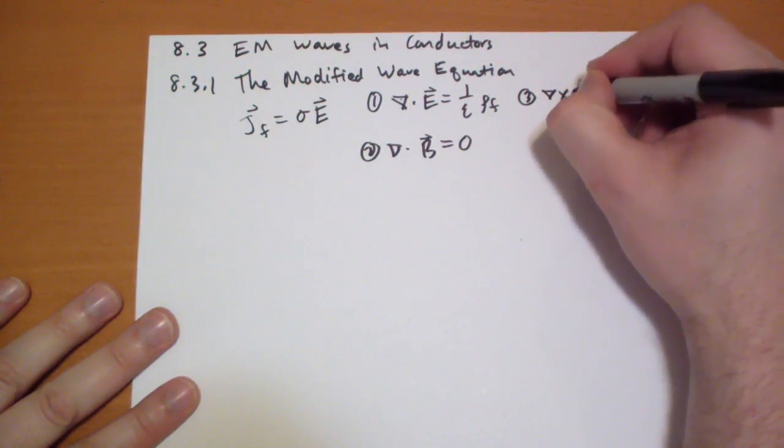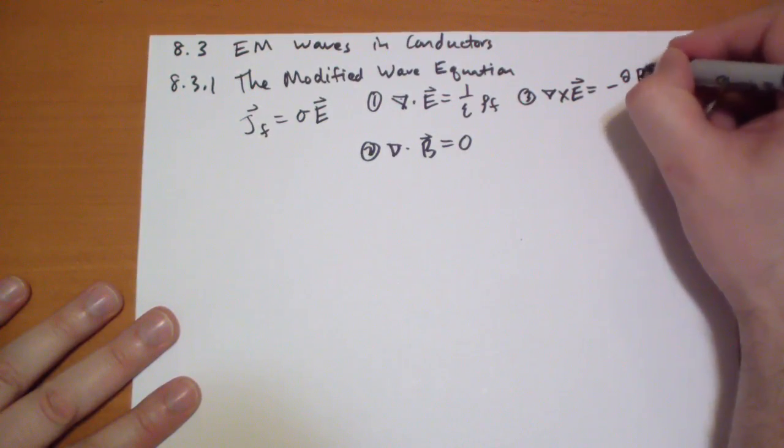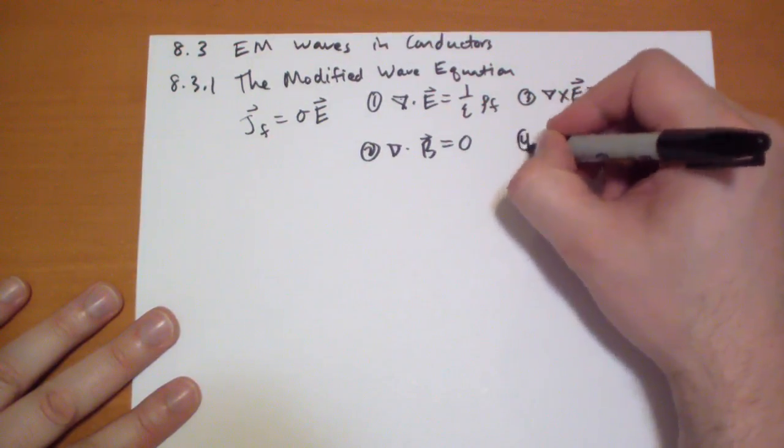And three, we have the curl of the E field is equal to the time derivative of the B field. Negative the time derivative of the B field. And four,